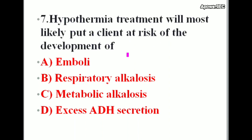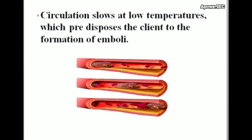Next question: Hypothermia treatment will most likely put a client at risk of the development of — options: emboli, respiratory alkalosis, metabolic alkalosis, excess ADH secretion. Correct answer is emboli. Circulation slows at low temperatures, which predisposes the client to the formation of emboli.